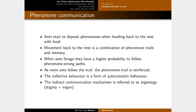Ants start to deposit pheromones when heading back to the nest with food — it's almost like the ant is happy that it found food, so it starts to drop pheromones. Moving back to the nest is a combination of pheromone trails and memory. When ants forage, they have a higher probability to follow strong pheromone paths. As more ants follow the same trail, the pheromone trail gets reinforced with even more pheromones, forming almost an autocatalytic behavior — it feeds itself. This indirect communication is referred to as stigmergy.